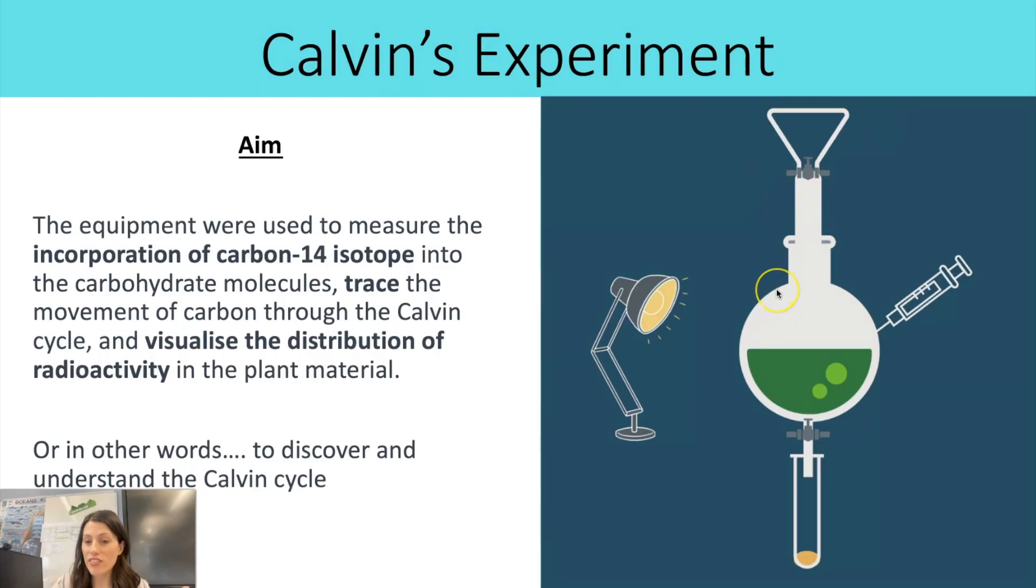So here we have Calvin's apparatus. And within this equipment, one of the key things you need to know is it's all about the incorporation of a carbon-14 isotope, so a radioactive form of carbon. And that is so that it can easily be traced and tracked throughout the different carbon-containing molecules as it's been absorbed and passed on. So in this way, they were able to visualize the distribution of radioactivity in the plant material. Or in other words, they were able to discover and understand the Calvin cycle.